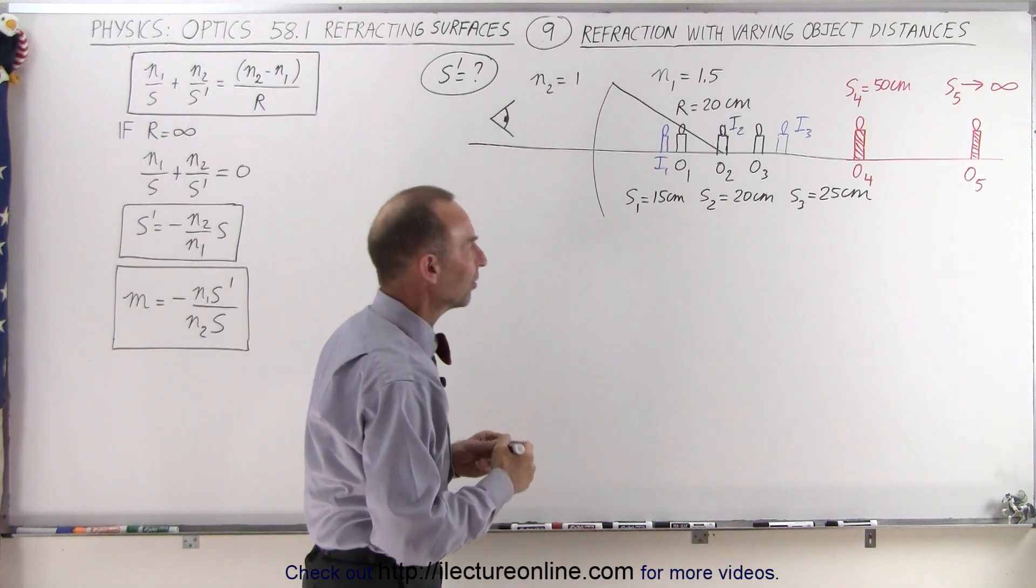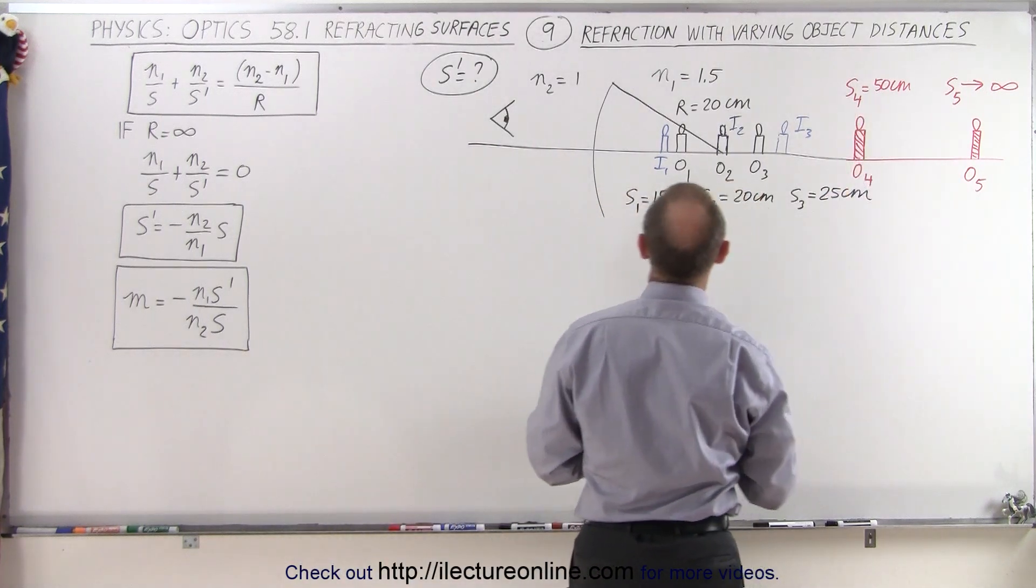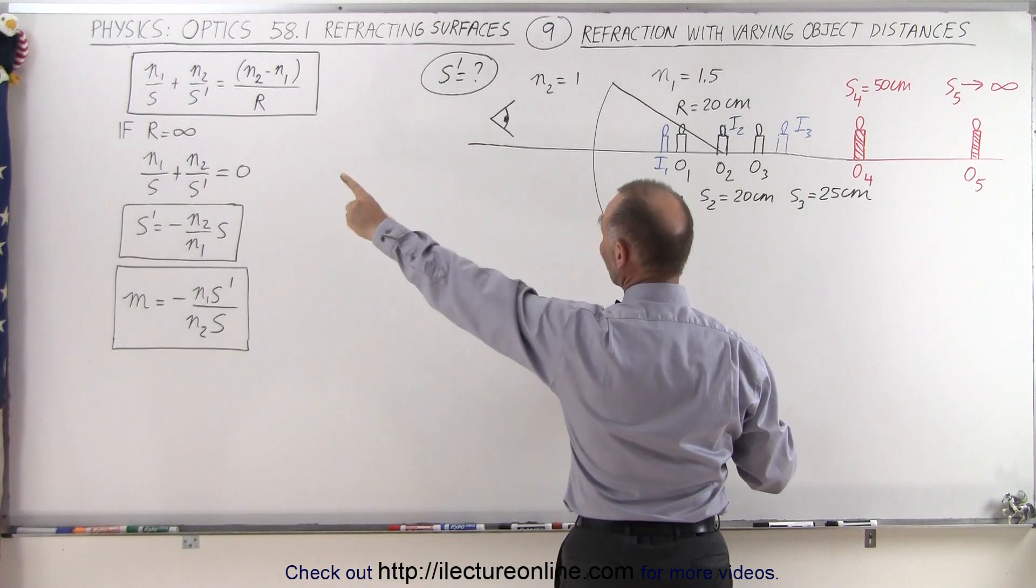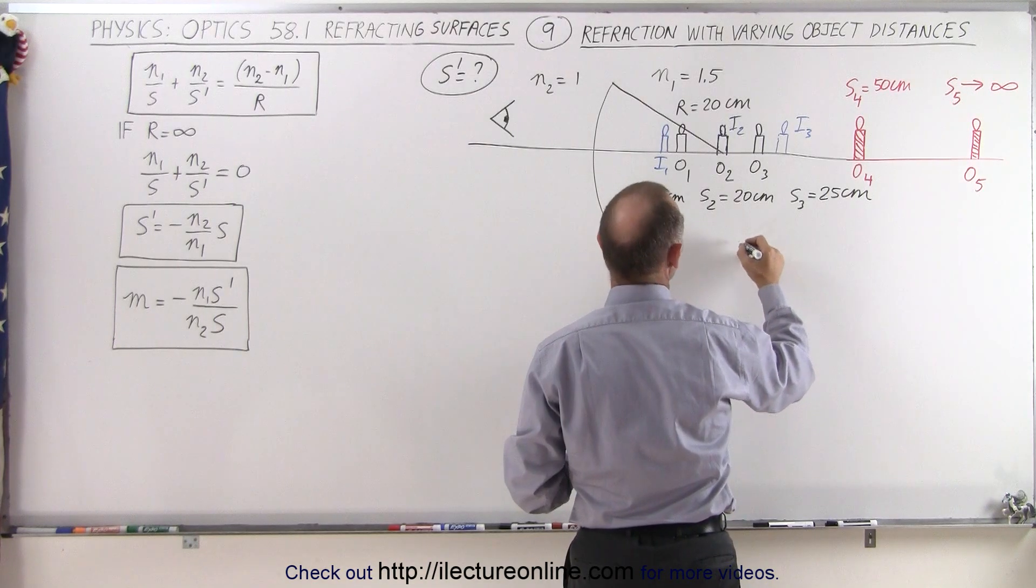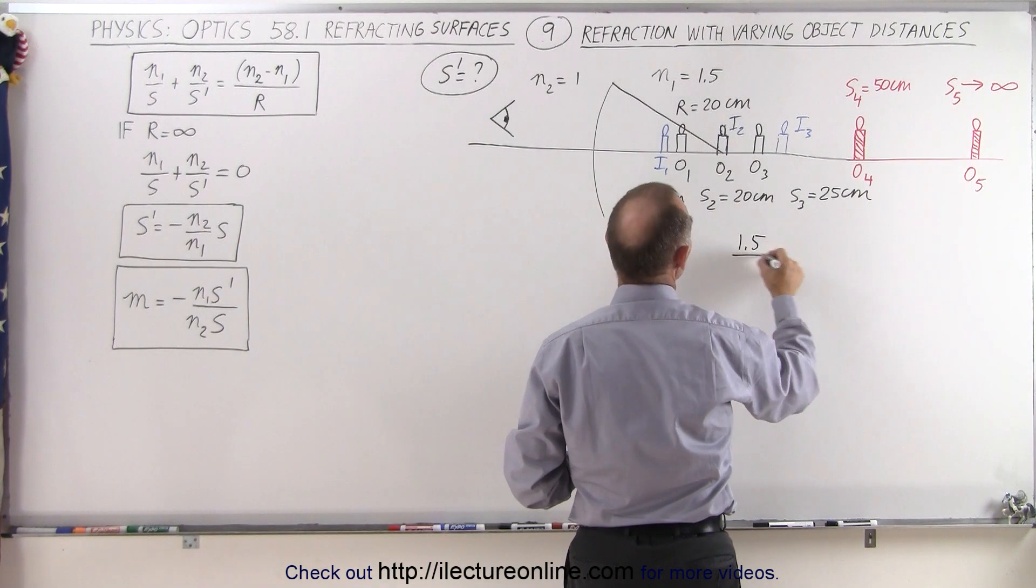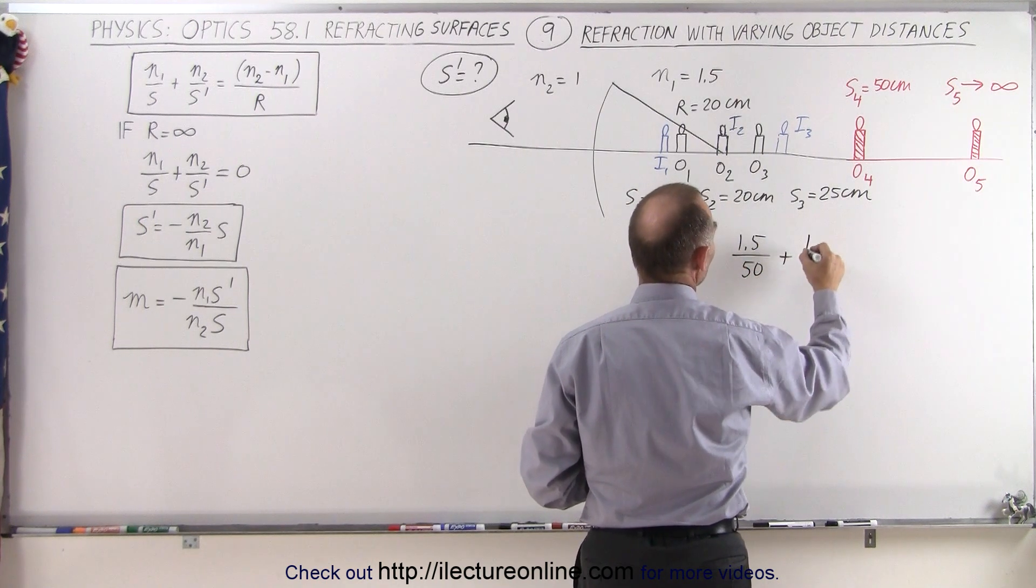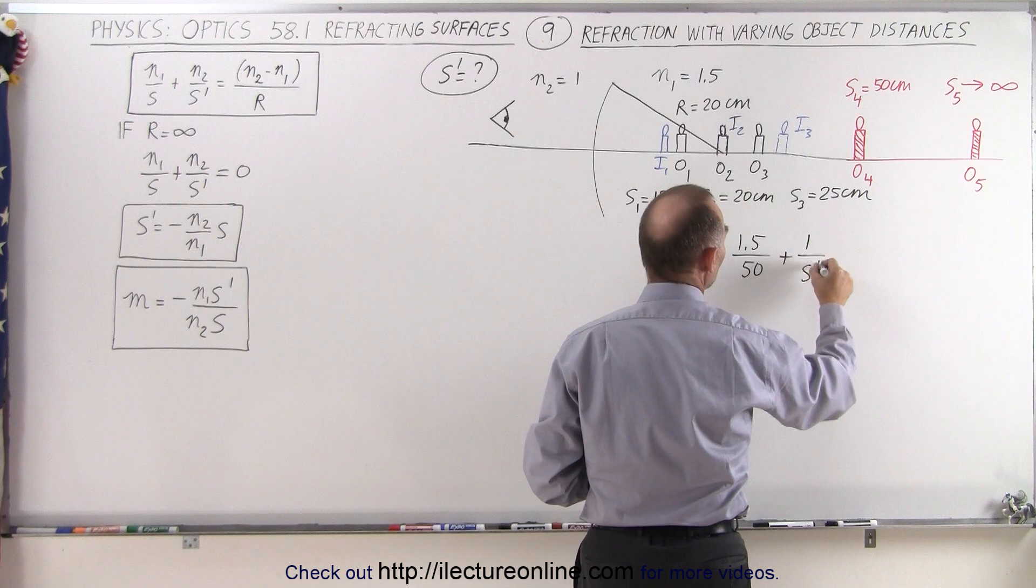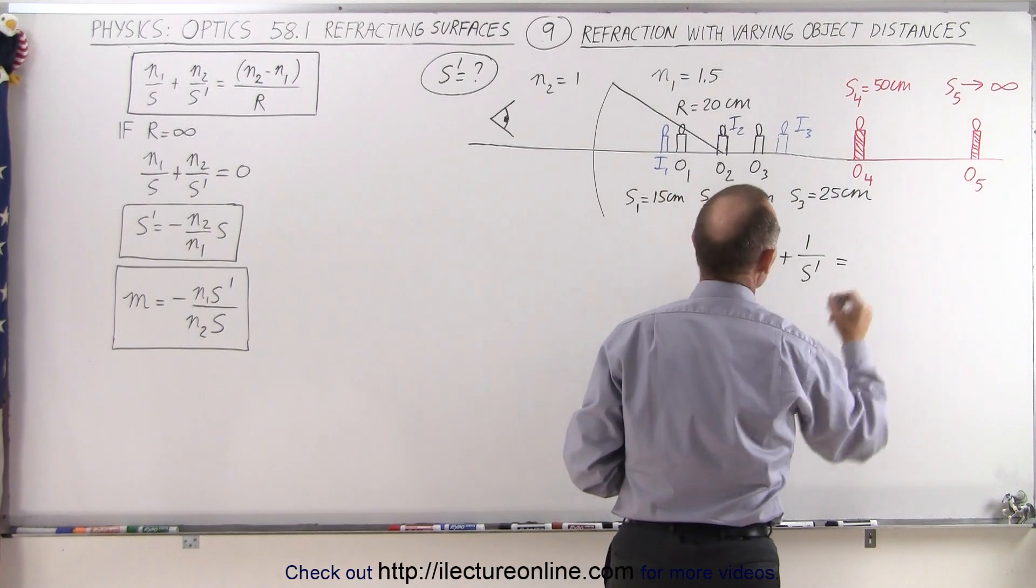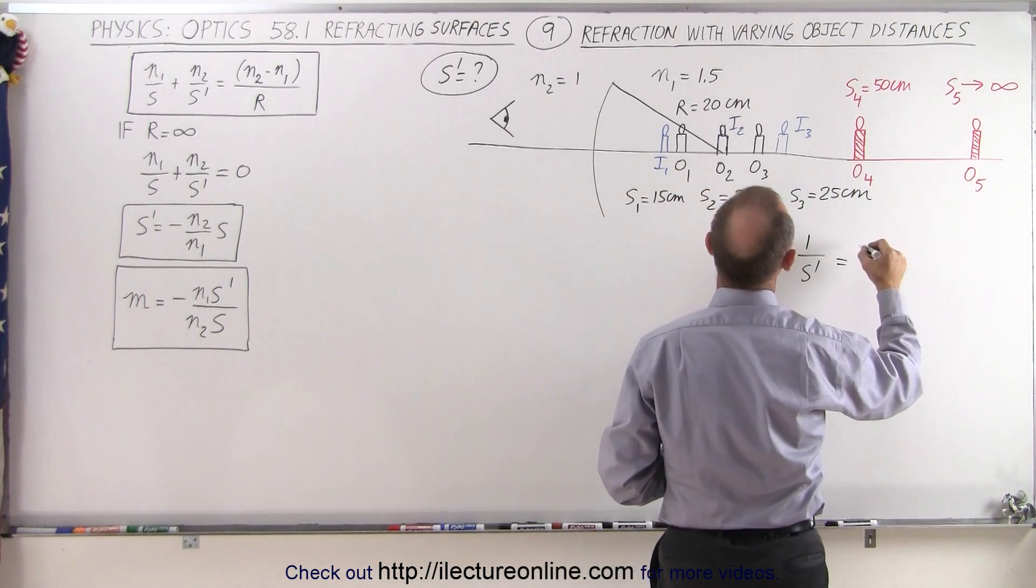Well let's tackle the next one when the object is 50 centimeters away from the boundary. Again we use the same equation: N1, which is 1.5, divided by s, which now becomes 50 centimeters, plus N2, 1, divided by s prime, which is what we're looking for. That's going to be equal to N2, which is...